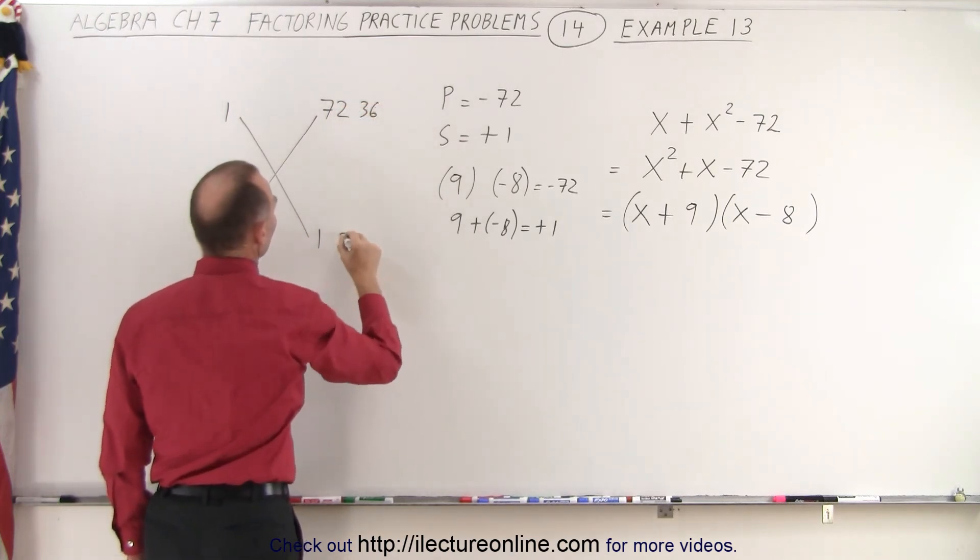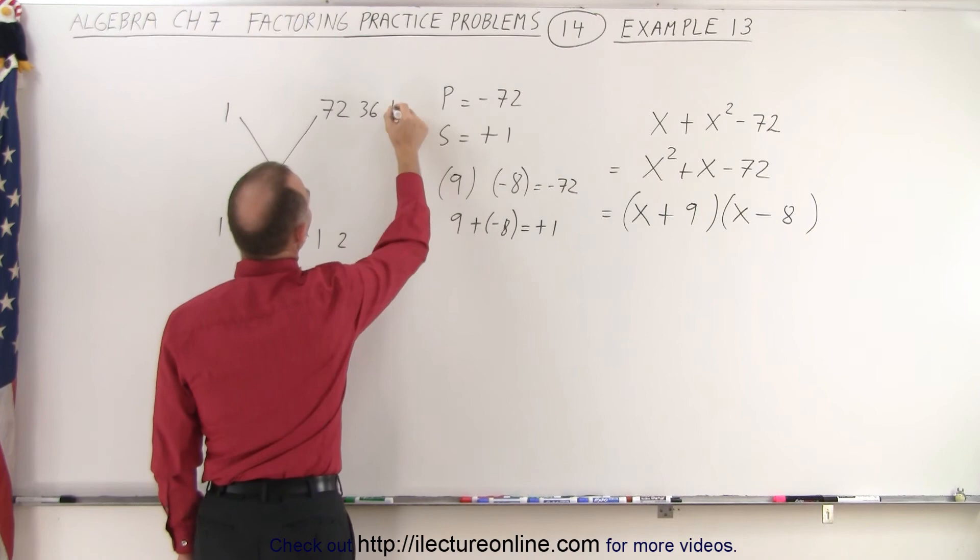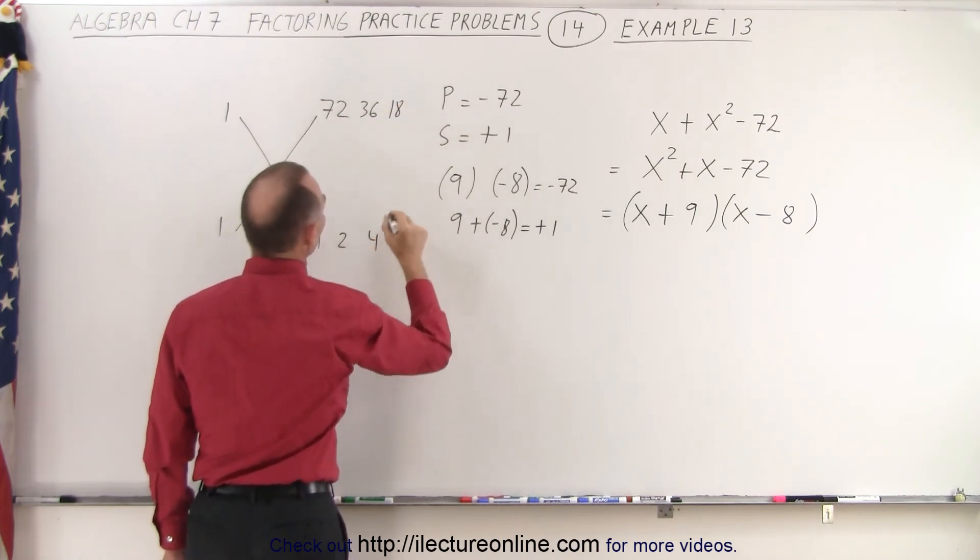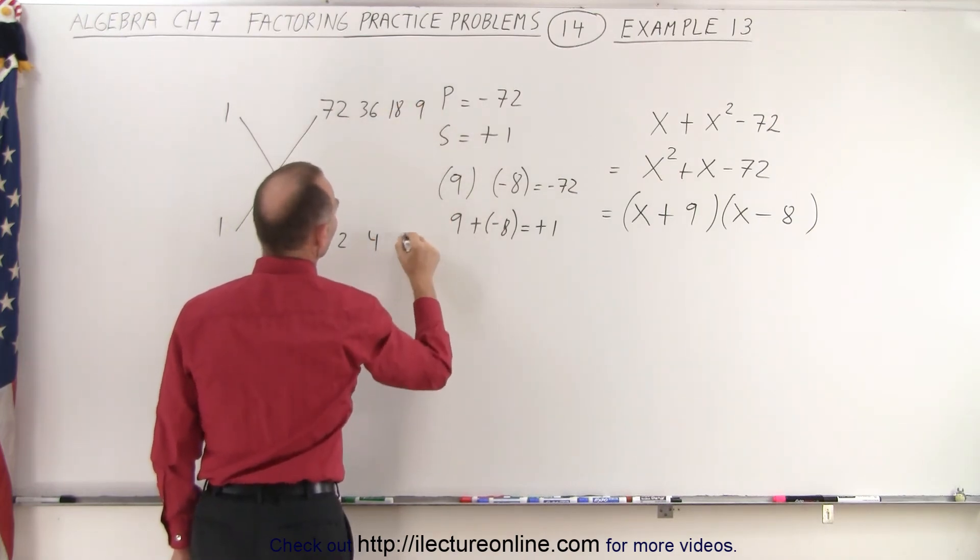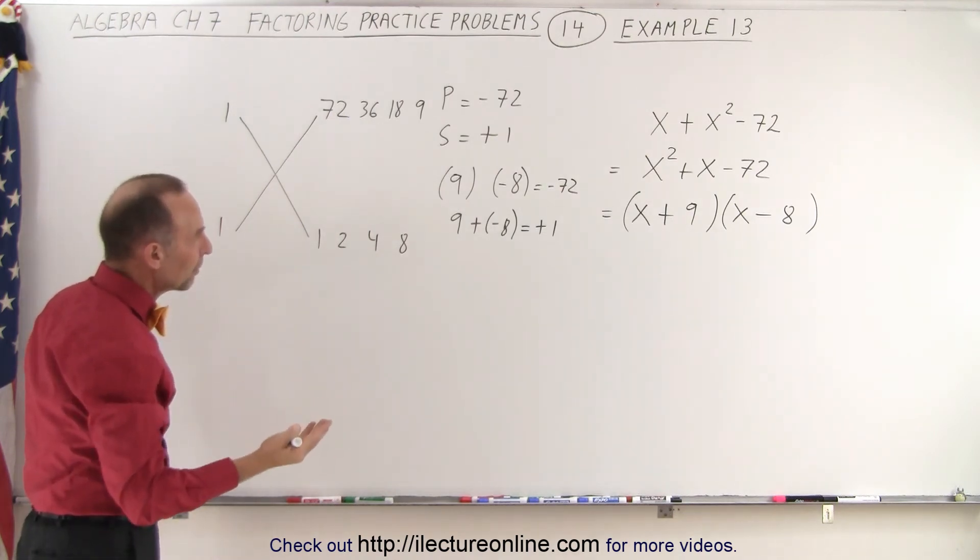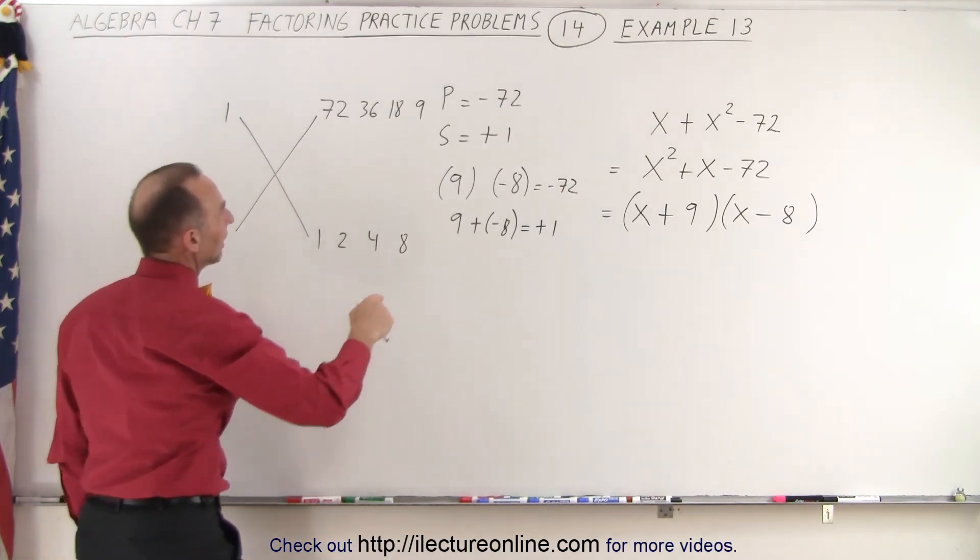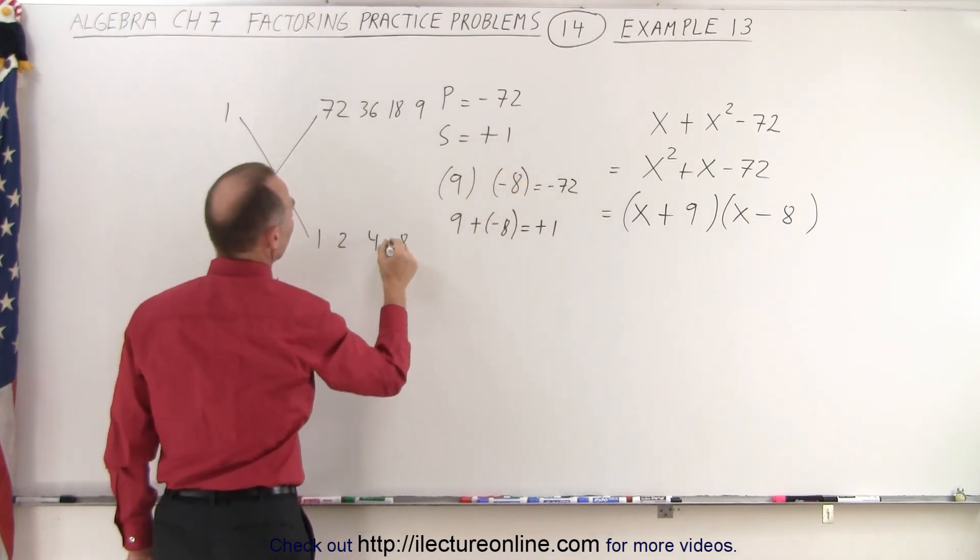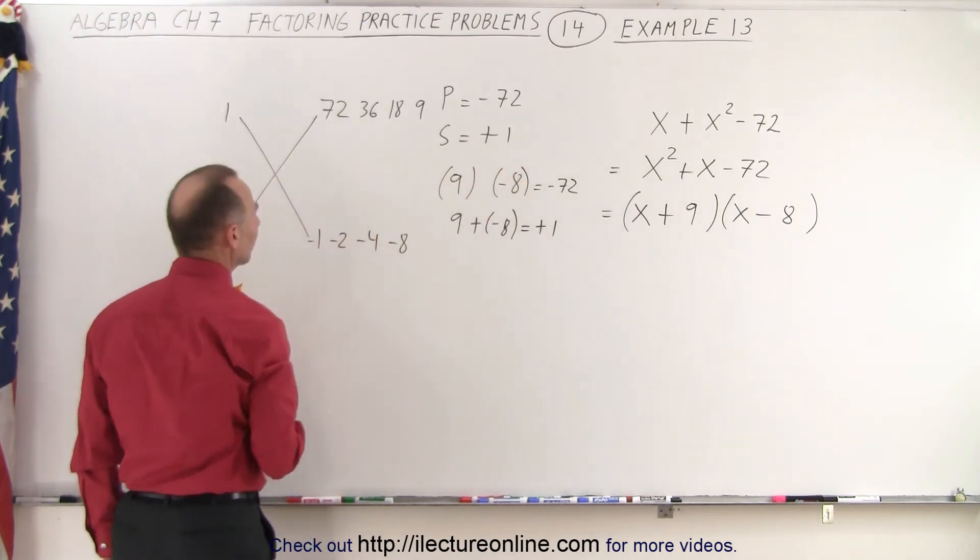or perhaps 18 and 4, or 9 and 8. Those are some of the combinations. And of course, I know that one must be positive and one must be negative. And I know that the positive one must be bigger. So then I can go ahead and do this.